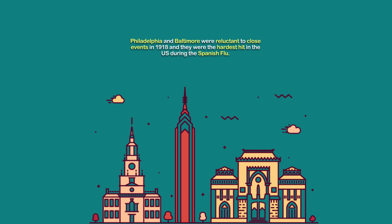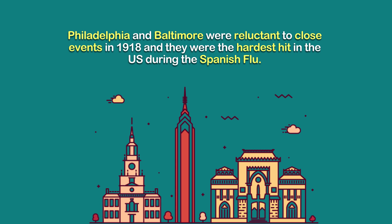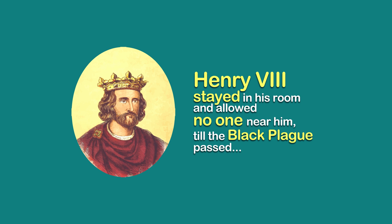Philadelphia and Baltimore were reluctant to close events in 1918 and they were the hardest hit in the US during the Spanish flu. Factoid: Henry VIII stayed in his room and allowed no one near him till the Black Plague passed.